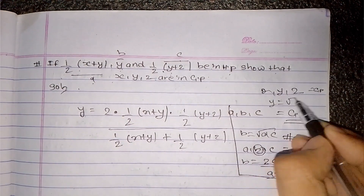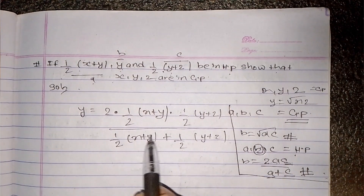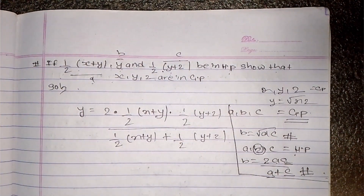x, y, z are in GP means y equals root under xz. This means y equals √(xz), which is what we need to prove.